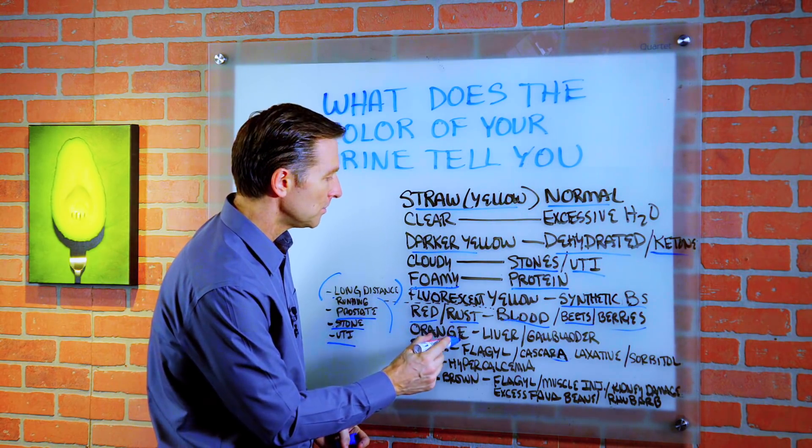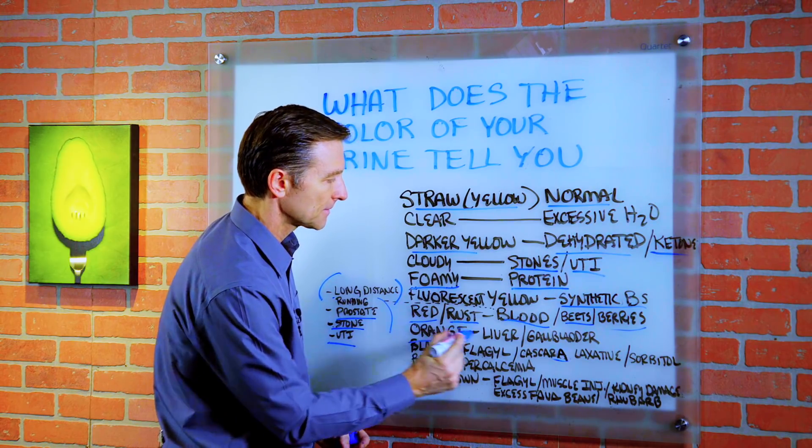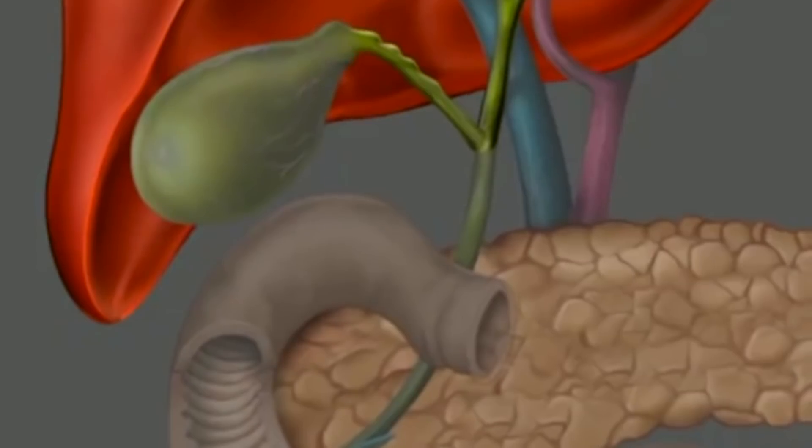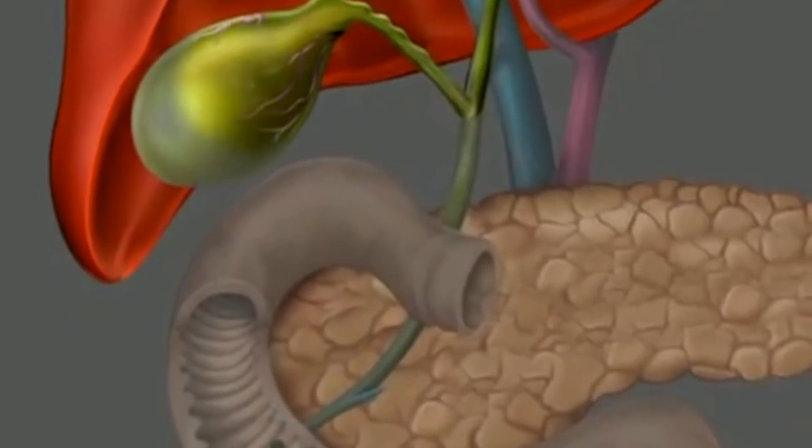If the urine is orange, it could mean that you have a liver problem or a gallbladder problem, especially if your stool is light colored.